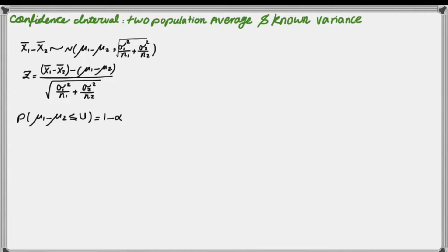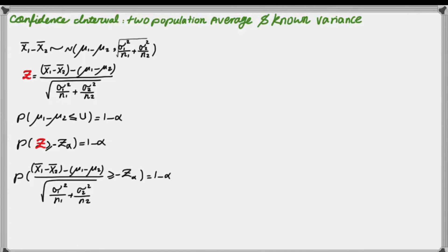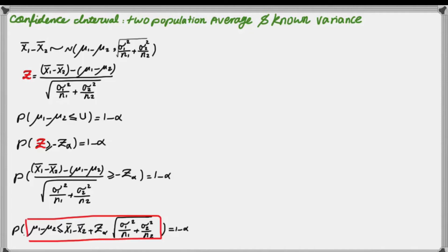I'm going to use the standard normal probability distribution. We know that the probability that z is greater than negative z of alpha is 1 minus alpha. Because if we look at the normal distribution, the area after negative z of alpha is 1 minus alpha, since the area before it is alpha. Using this property, I'll develop my confidence interval by replacing the value of z with the z in the probability term, multiplying both sides by the standard deviation term, and isolating mu1 minus mu2. The result is the upper bound we were looking for — the probability that the difference between the two population averages is less than this term equals 1 minus alpha.